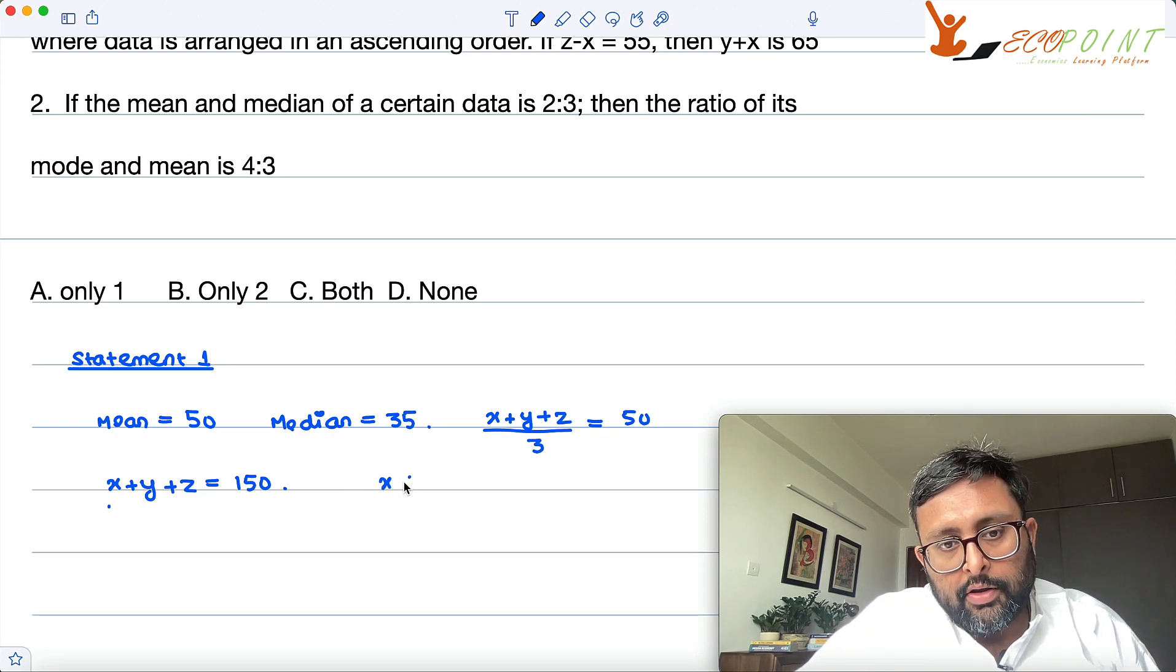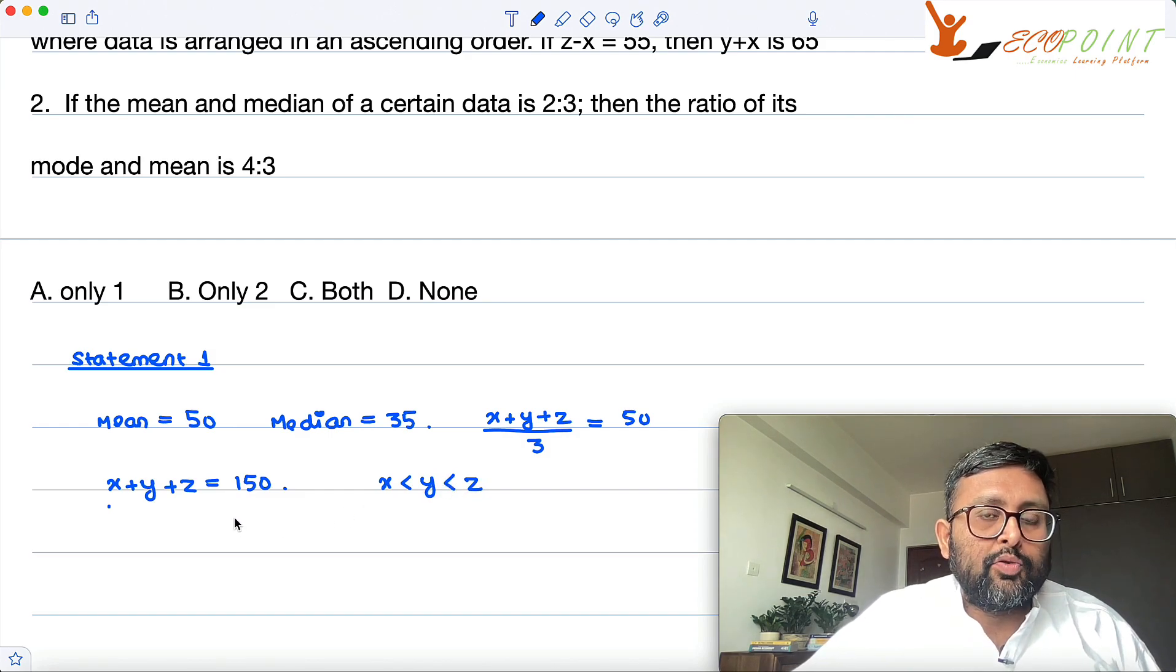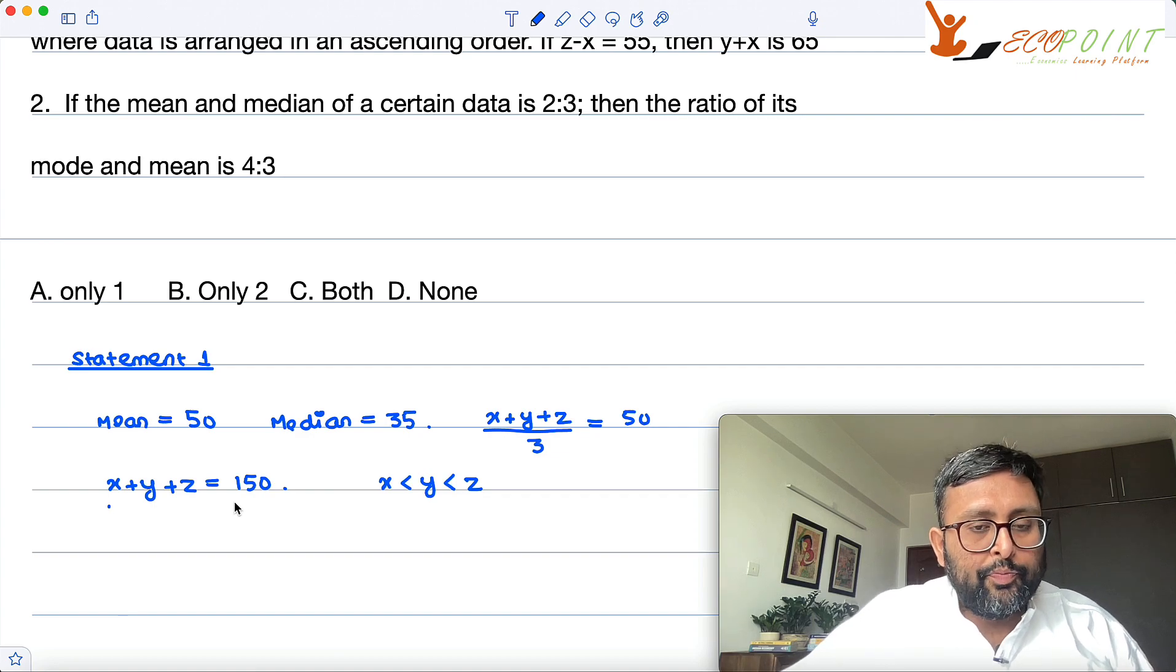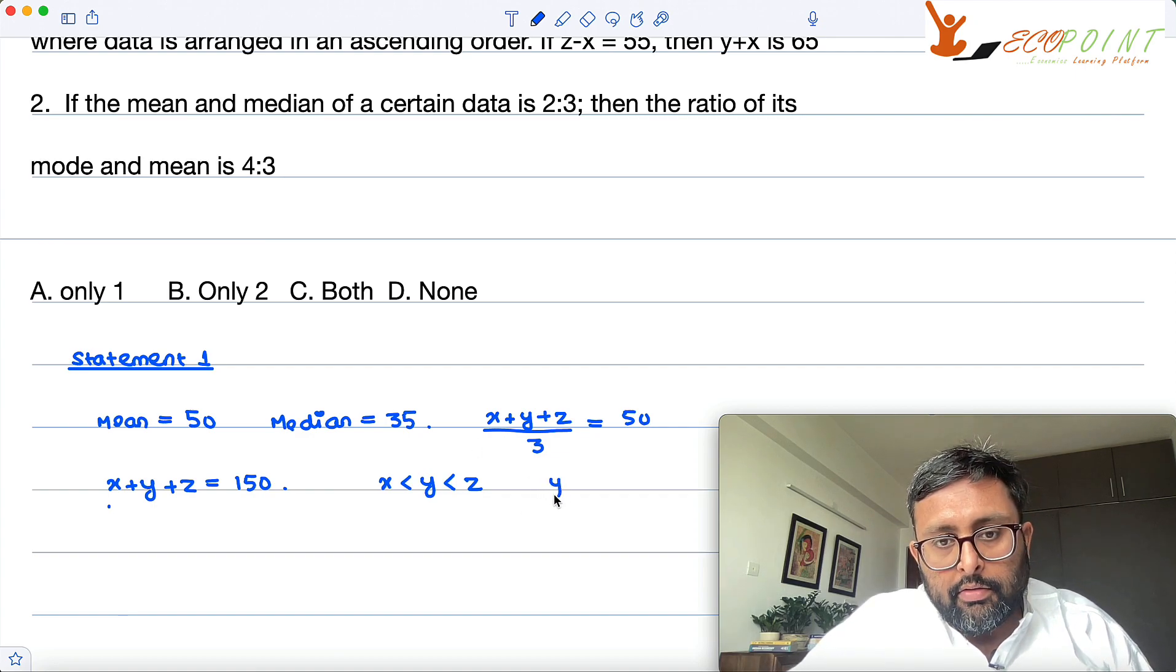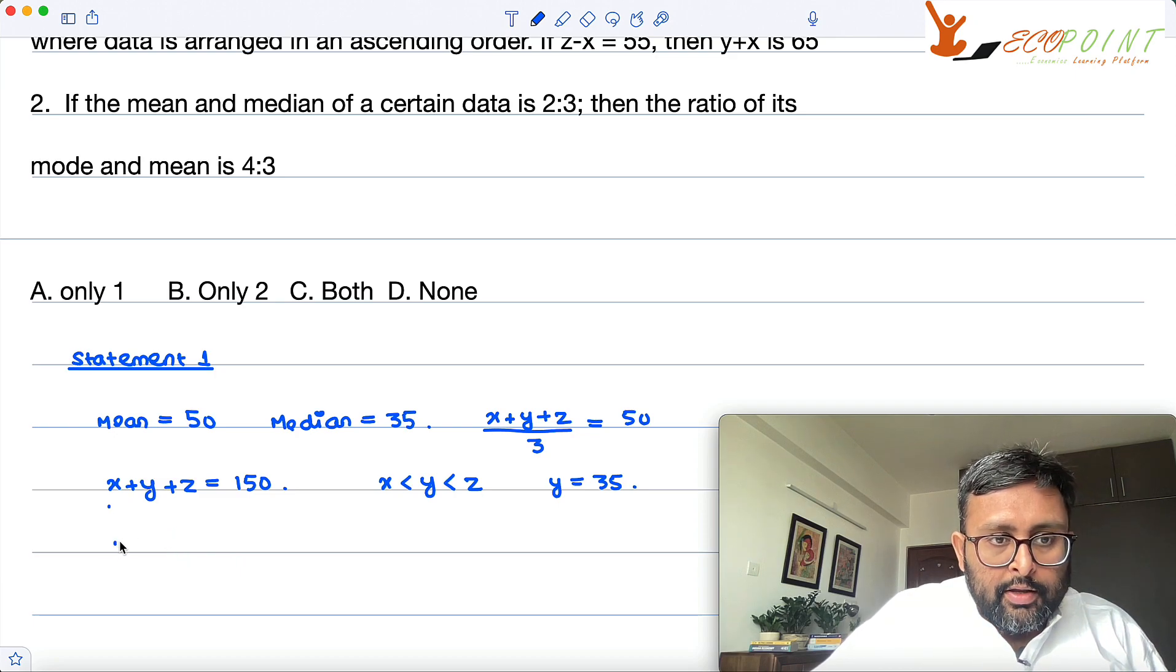And you are also given x is less than y is less than z. So median is the data which is in the middle. So y is the median, right? And the value for median is given to you as 35. Value for median is given to you as 35.